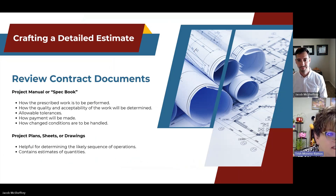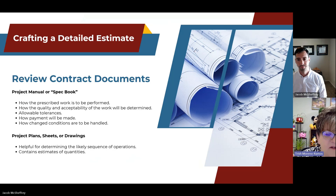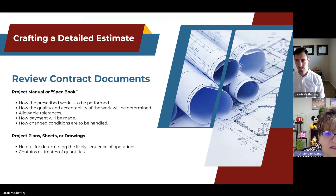When crafting a detailed estimate, you really want to review the contract documents — the project manual or spec book. It tells you how the prescribed work is to be performed, how quality and acceptability of work will be determined, any allowable tolerances, how payments will be made, and how changed conditions are handled. Read all of it. Especially when working with a new agency, you need to know the required contract provisions and whether any bonding is required.